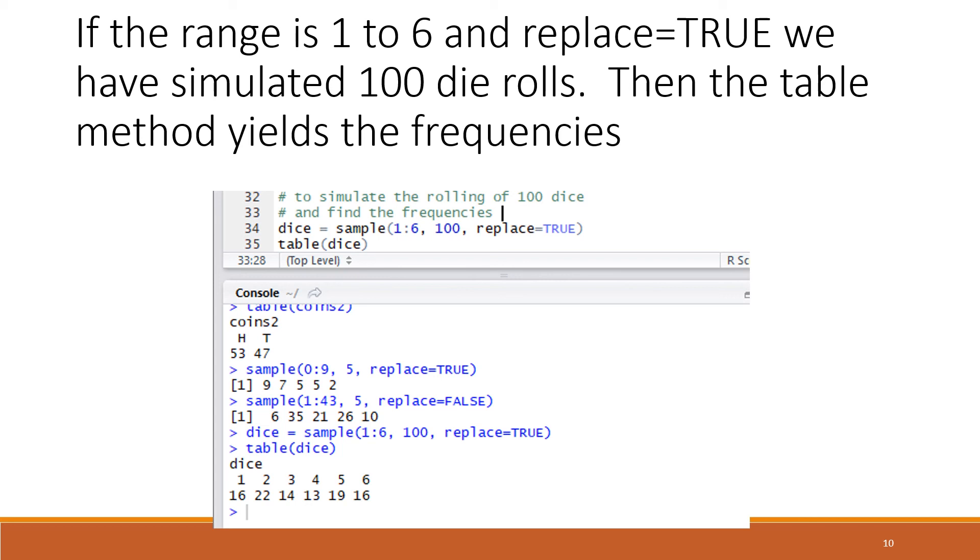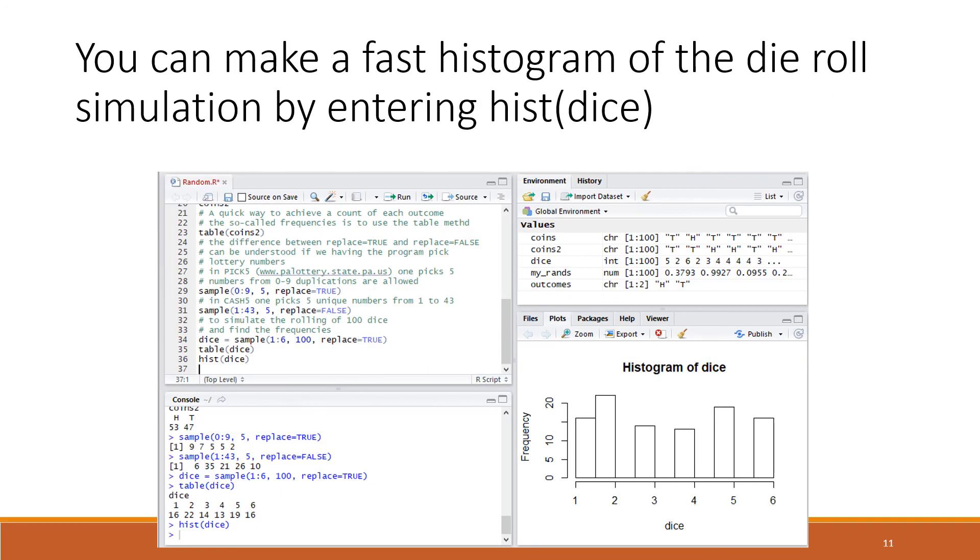We can make a fast histogram of a set of data by using the function hist. Here is hist(dice). Dice was our sample of simulating the die 100 times and here we've made a histogram of that, but it's sort of awkwardly spaced. The 1 and 2 are near each other and then the others are spread out, so we want to learn to have a little more control of our histograms.